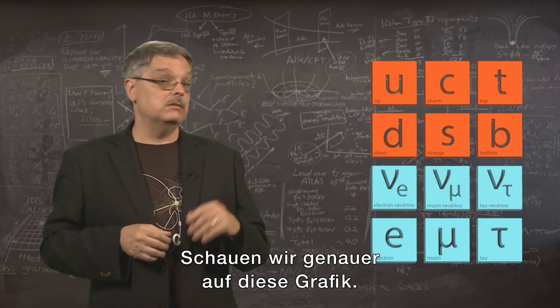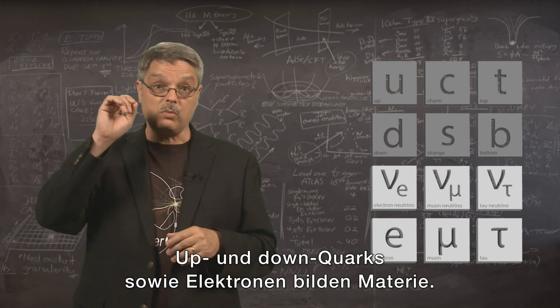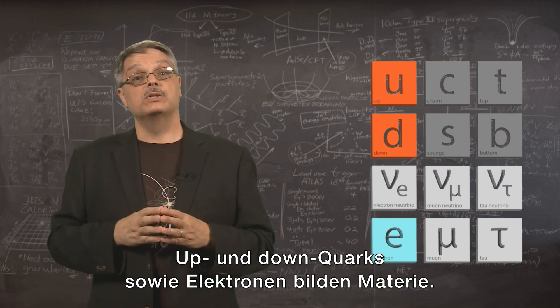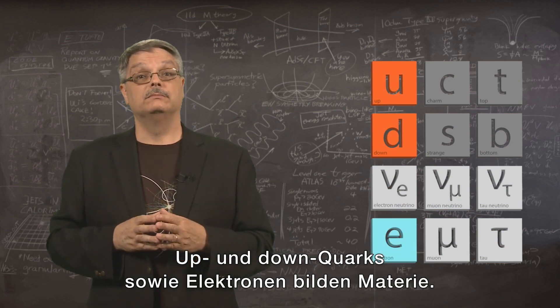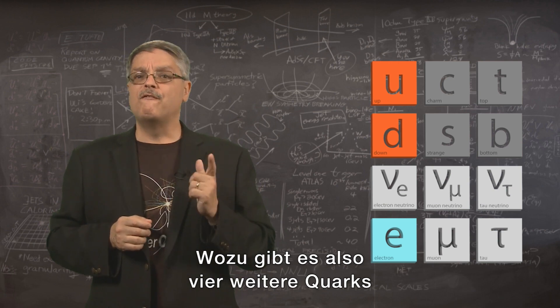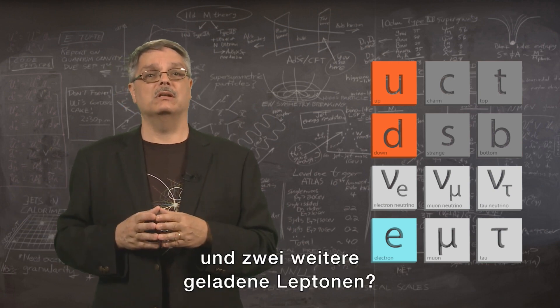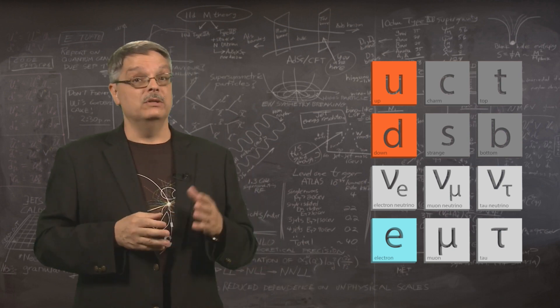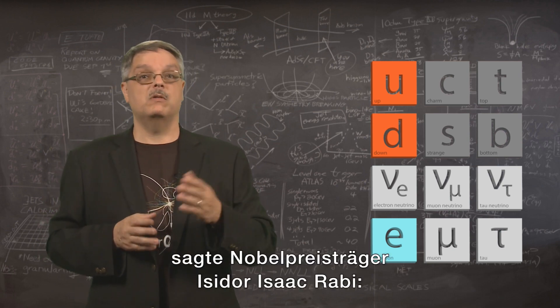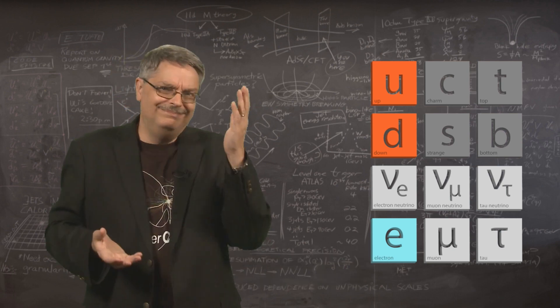So let's take another look at this graphic. We have up and down quarks and electrons that make up matter. So why are there four other kinds of quarks and two other charged leptons? When the muon was found, Nobel Prize-winning physicist I.I. Rabi is reported to have said, who ordered that?